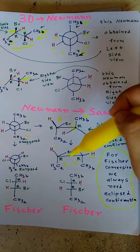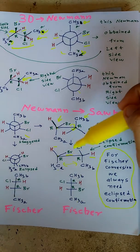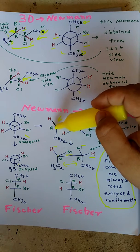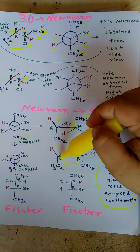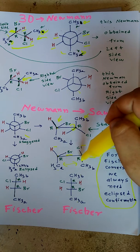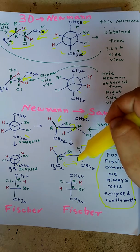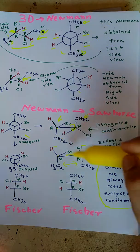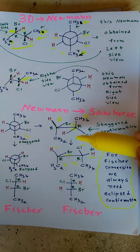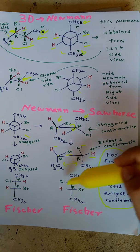In conformations there is no change in configuration. See here — R, R configuration at this carbon and at this carbon as well. Here also R configuration and here also R configuration. That means we have rotated correctly, because configuration does not change in conformations.